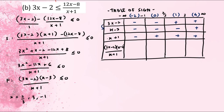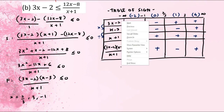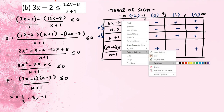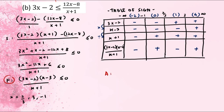Notice the operation: for the numerator factors you multiply the signs together, but for x + 1 you divide. So minus times minus is plus, divided by minus gives minus. Plus times plus is plus, divided by minus gives minus. Plus times minus is minus, divided by plus is minus. And all positives together gives plus. Since our inequality is ≤ 0, we take the negative regions.